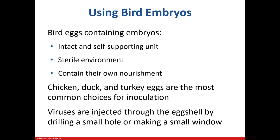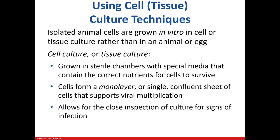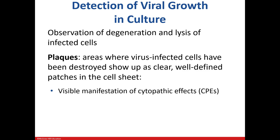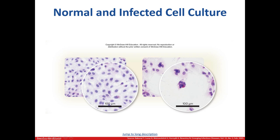Bird embryos are often used, as they have all the nutrients needed to survive and provide a sterile environment. Researchers use tiny holes to inject the embryos with the virus they're trying to grow or study. Animal cells are grown in vitro instead of using an animal, in a completely sterile environment in a special medium. They're grown in a monolayer, which gives researchers the ability to directly see the effects of the virus on the cells. Researchers can make observations to determine if damage or lysis occurs. They can visually detect plaques, which are clearings seen in the cell sheet. The image on your left shows a microscopic view of cells prior to being infected, compared to the right, which shows the cytopathic effects after infection.